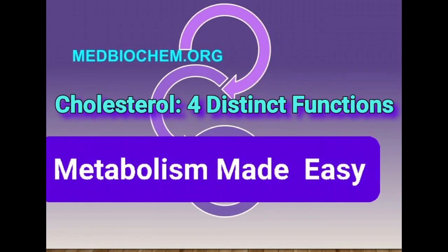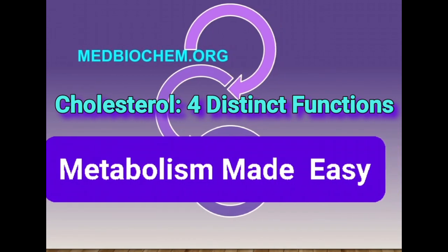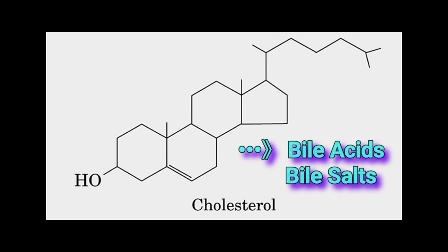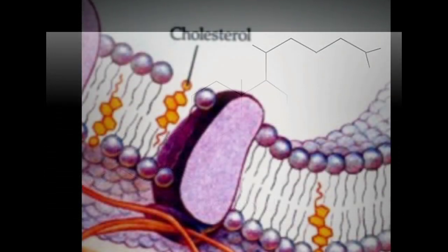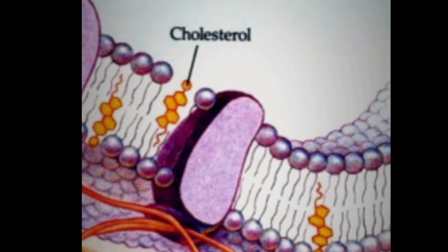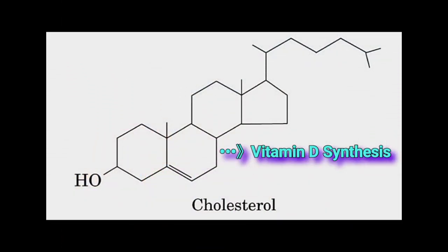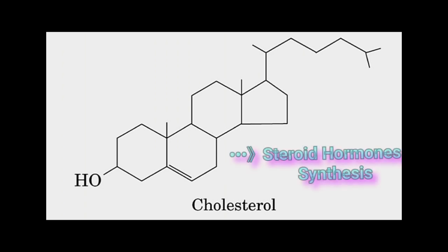Cholesterol is a unique sterol and is essential for at least four distinct cellular functions. Cholesterol is needed for the synthesis of bile acids and bile salts, which are needed for emulsification of dietary lipids, digestion, and uptake. Cholesterol is needed for membrane synthesis and for the maintenance of membrane fluidity. Cholesterol is the precursor for the synthesis of vitamin D, and it is the precursor for the synthesis of all steroid hormones, including cortisol, androgens, and estrogens.